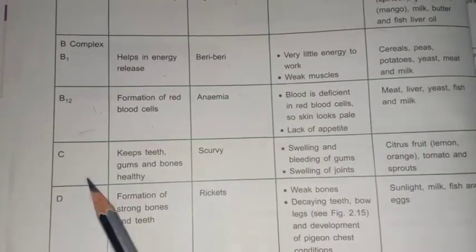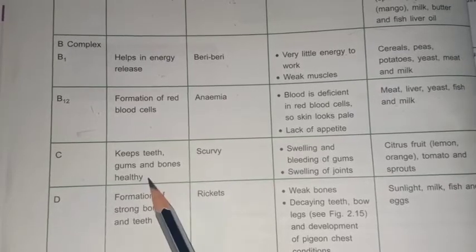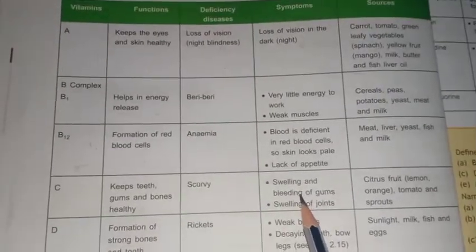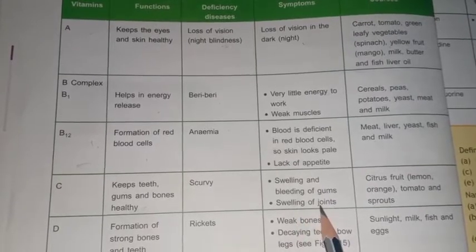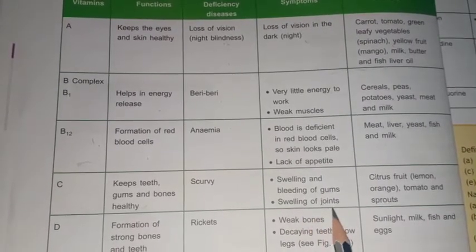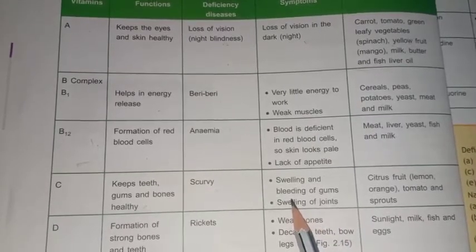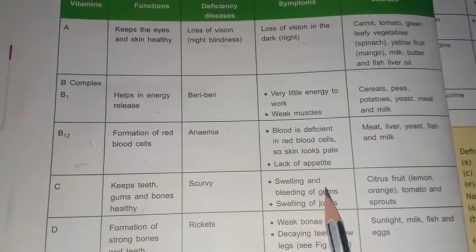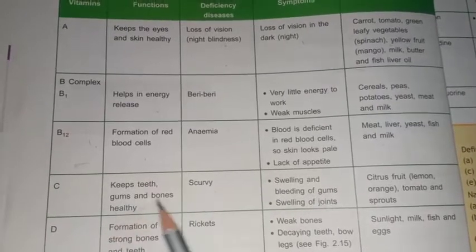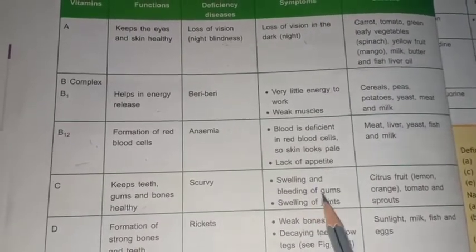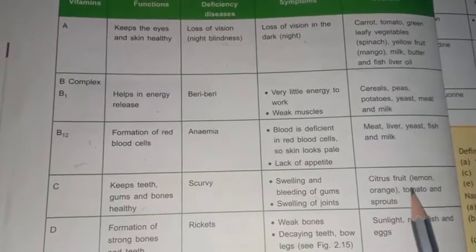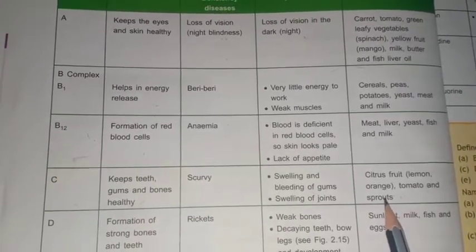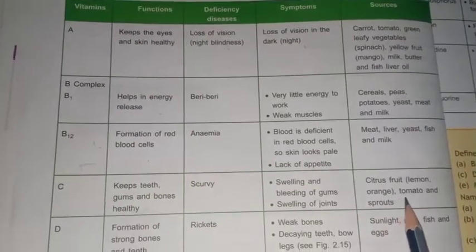Next we have Vitamin C. Vitamin C keeps the teeth, gums, and bones very healthy. Its deficiency causes scurvy disease. Symptoms are swelling and bleeding of the gums and swelling of the joints. If you get swelling in your joints or bleeding from your gums, you are suffering from Vitamin C deficiency, called scurvy. Sources are citrus fruits like lemon, oranges, tomatoes, and sprouts.